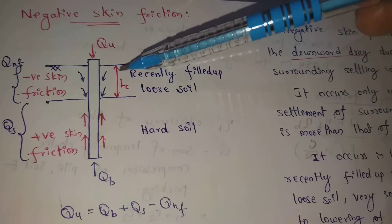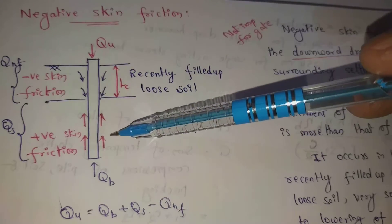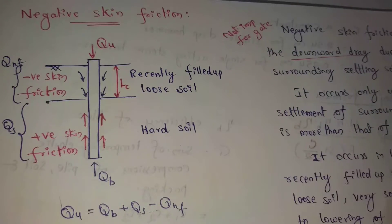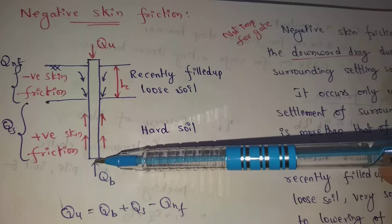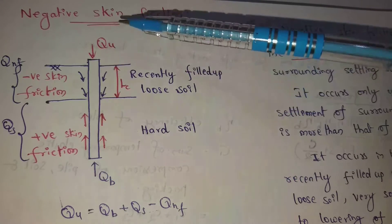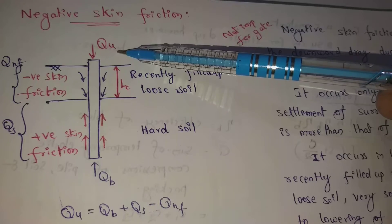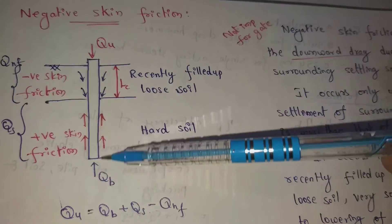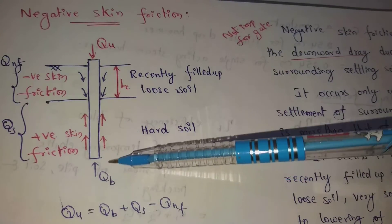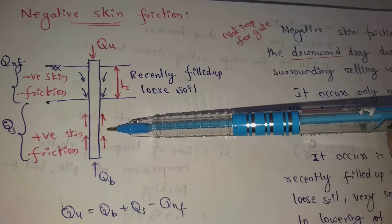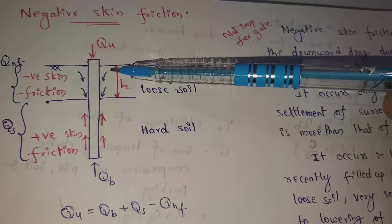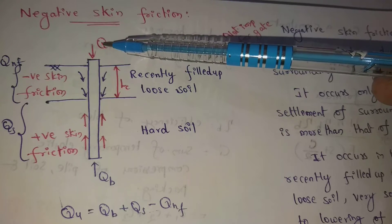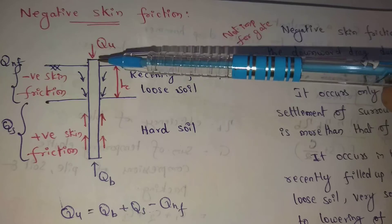In the yellow sand layer, negative skin friction is present. In the hard side (stiff layer), positive skin friction resistance is there, along with end bearing resistance. The ultimate load acts downward; end bearing and positive skin friction act in the opposite direction, while negative skin friction acts in the same direction as the load.